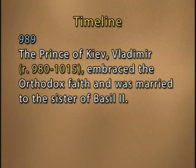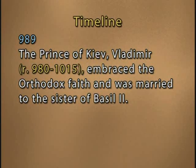Basil's empire had influences radiating far beyond its political frontiers. Byzantine missionaries had successfully converted the South Slavic peoples and the Russians — starting in 989, the prince of Kiev, Vladimir, embraced the Orthodox faith and was married to the sister of Basil II. The Byzantine state in Basil's time is often referred to as a Byzantine commonwealth, extending beyond its immediate political area.